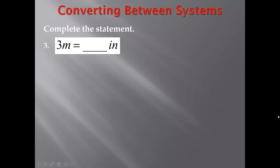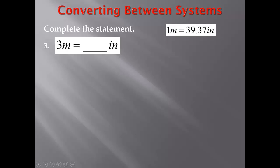And now for my third problem: 3 meters equals blank inches. First, I need to look at my conversion factor, and I have that 1 meter equals 39.37 inches. I'll use this to solve my problem. I have 3 meters, which I'll write as a fraction with a 1 in the denominator, then multiply by my conversion factor. Since I'm converting to inches, I put that in the numerator and meters in the denominator. Using my conversion factor: 1 meter, so I'll put a 1 with meter, is equal to 39.37 inches, or 39 and 37 hundredths, so for inches I have 39 and 37 hundredths.